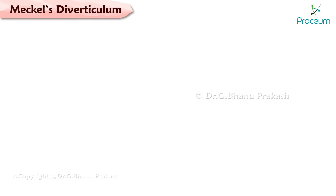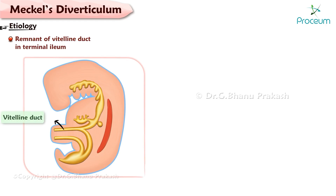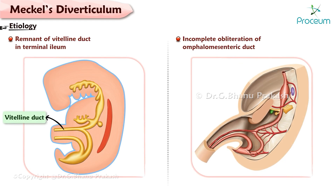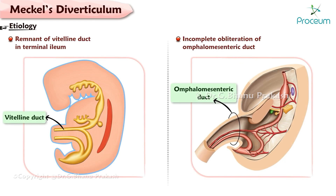Meckel's Diverticulum — Etiology. Meckel's Diverticulum is an anomalous remnant of the vitelline duct present in the terminal ileum that results from incomplete obliteration of the omphalomesenteric duct.